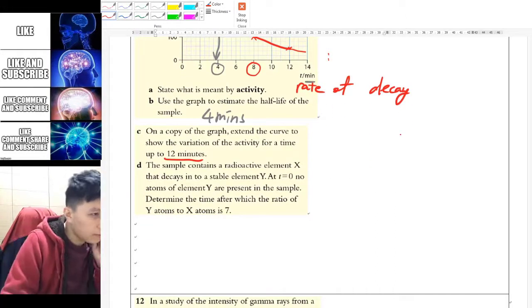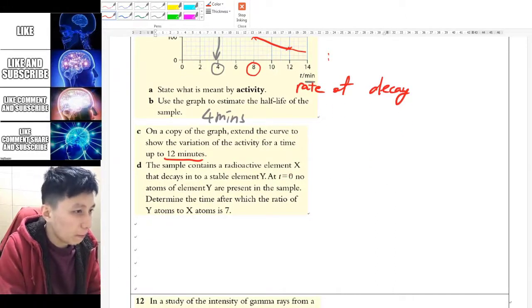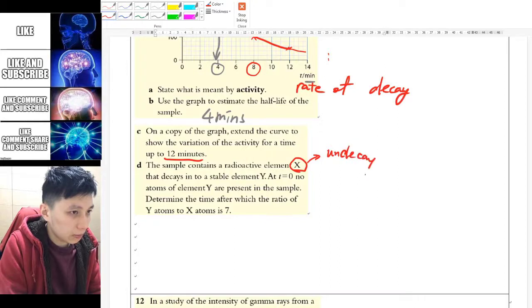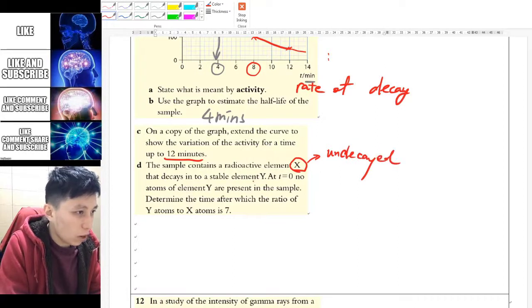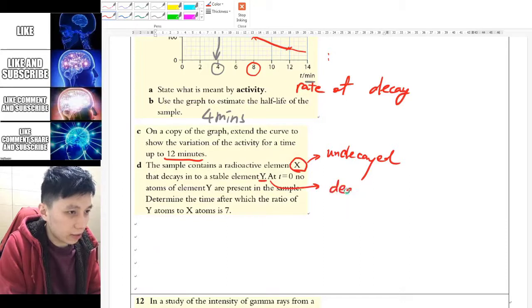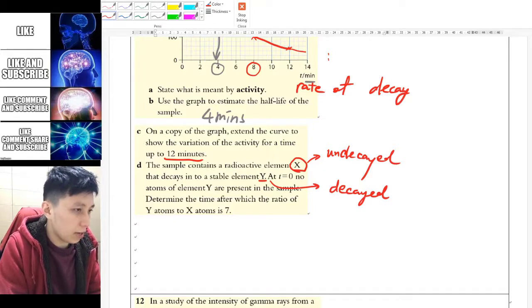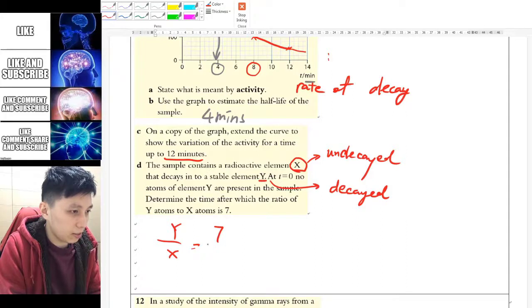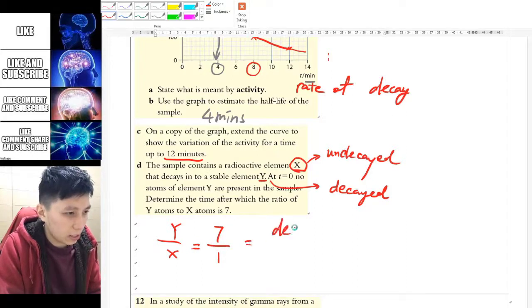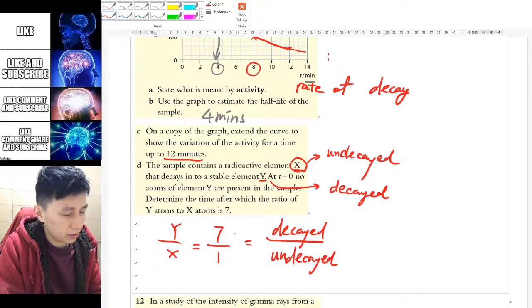Part D, the wording is a bit hard to understand. So what basically it means is, initially X is radioactive, so X is undecayed. You can remind yourself that. And Y is the one that is decayed already, right? The product, basically. At the beginning, there's no decayed particle or element inside. And determine the time when the ratio of Y to X is 7. So Y over X is 7 means 7 over 1 right? That means Y is decayed. Okay. Decayed over undecayed is 7 over 1.